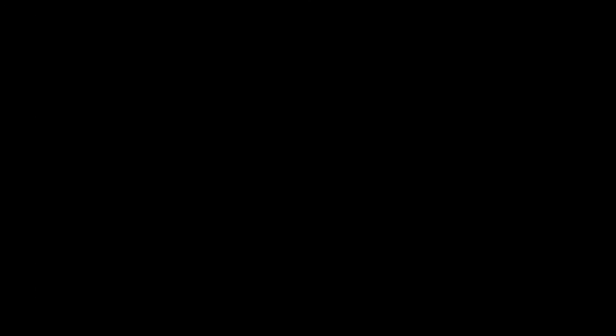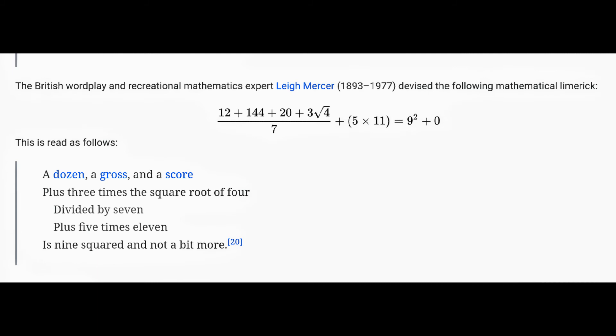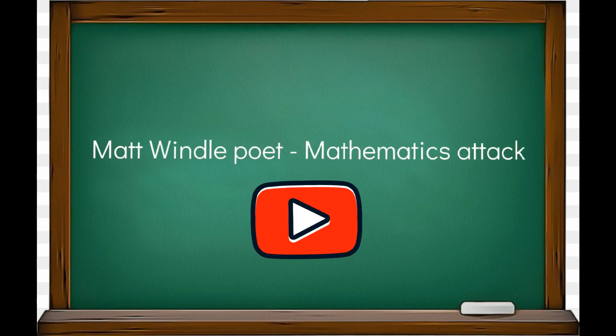Poetry, not just limericks, can be really beneficial for revision and memory retention. I deliver poetry maths revision sessions for GCSE students, and here's a limerick created by a British wordplay and mathematics expert Lee Mercer for the equation that you can see on your screen right now: A dozen, a gross, and a score, plus three times the square root of four, divided by seven, plus five times eleven, is nine squared and not a bit more. If you think that poetry may help you for your revision process, then check out my maths revision poem Mathematics Attack.